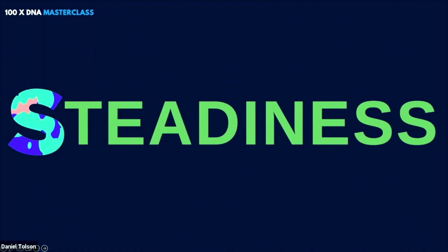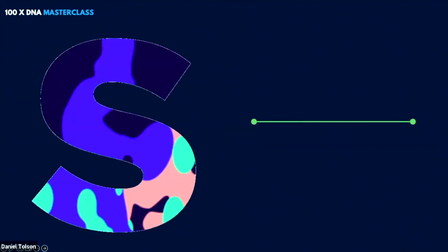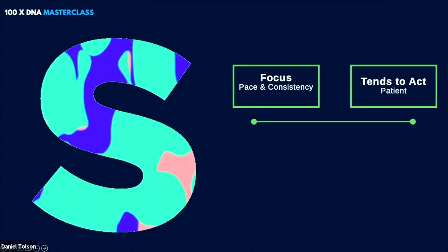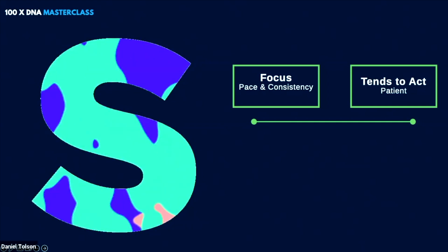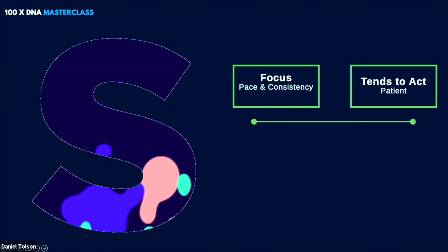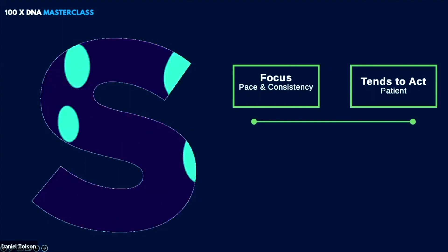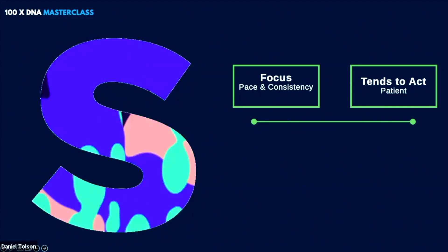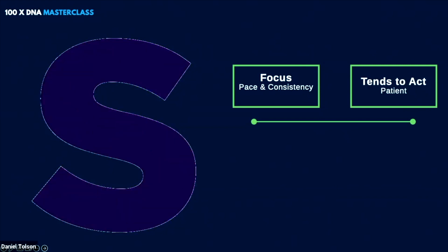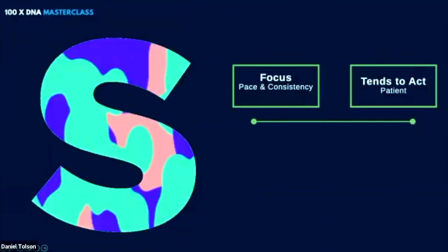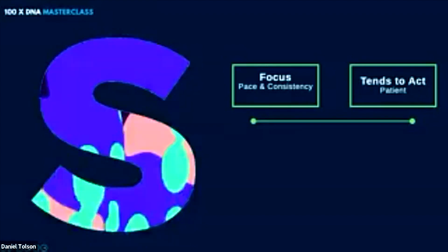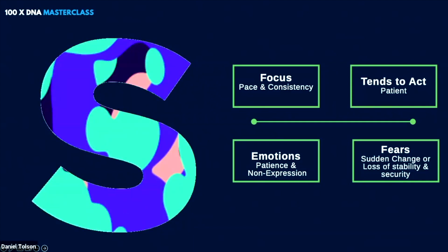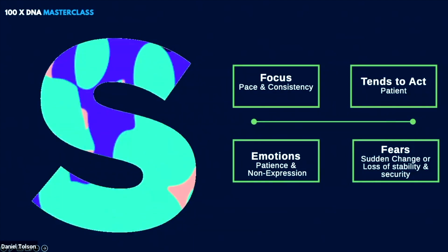So remember, S stands for steadiness. Now with the S style, the focus here is on how we approach pace and consistency. It's really how we attempt to control and steady the pace and the consistency of the environment. Do you like to go at a fast pace? Do you like to go at a slow pace? The high S is very, very patient and they use time to their advantage. The emotion that they carry is patience.